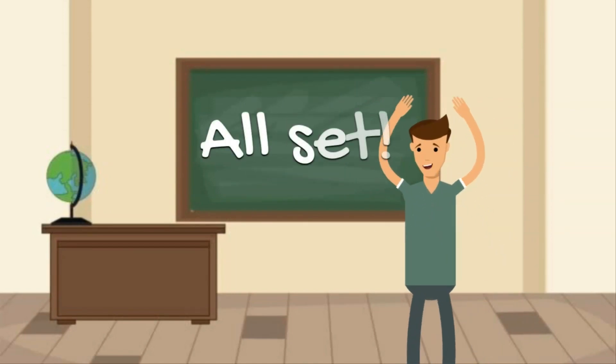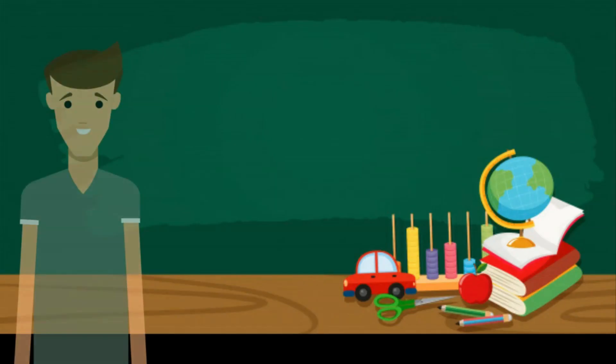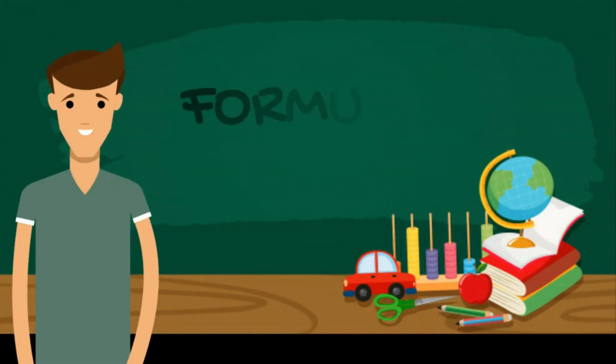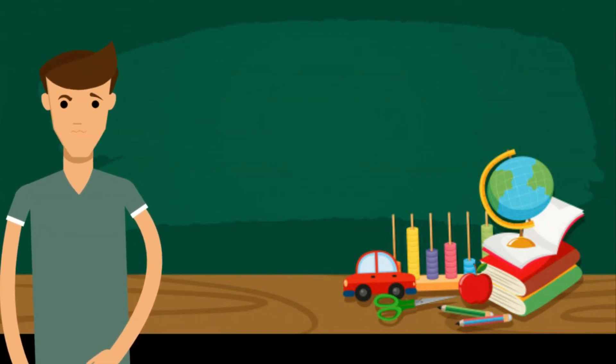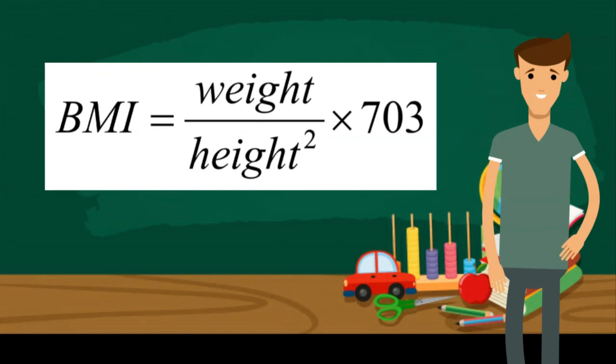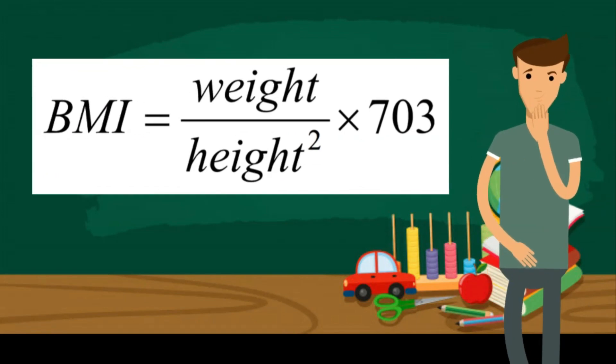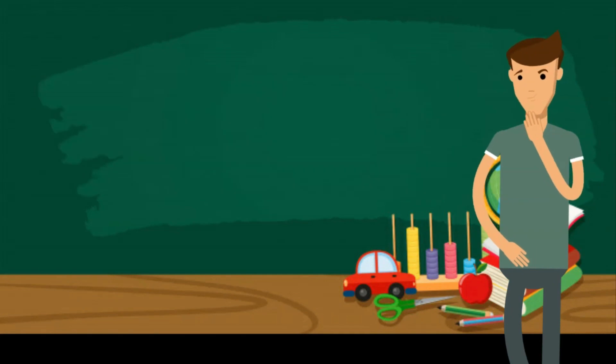After that, you're all set to calculate your BMI. You need a formula. BMI is calculated using this formula: BMI is equal to weight divided by height squared multiplied by 703.